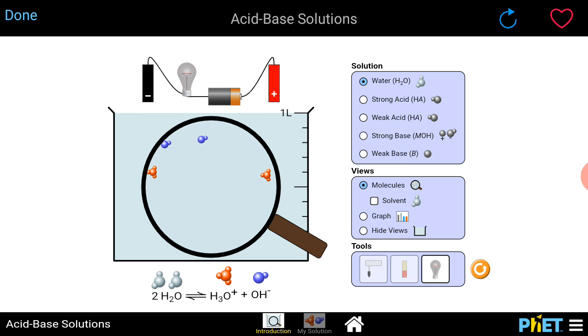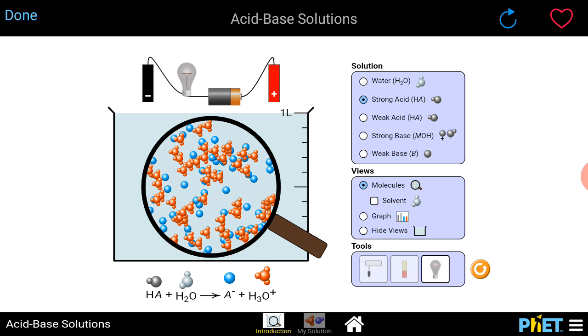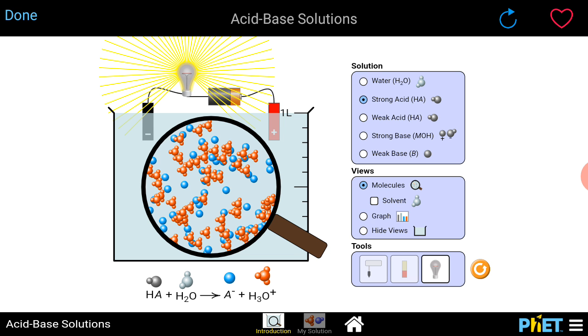So what happens if we put the wires that are connecting to the bulb in strong acid? This is a strong acid. So let's put the bulb in. You can see the bulb is shining brighter now.